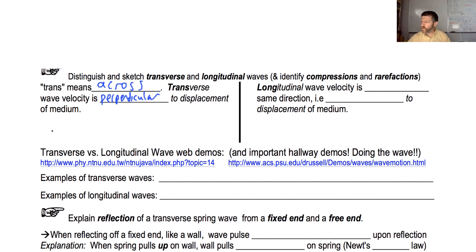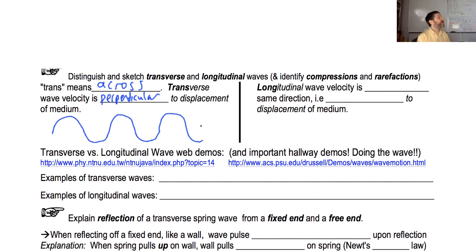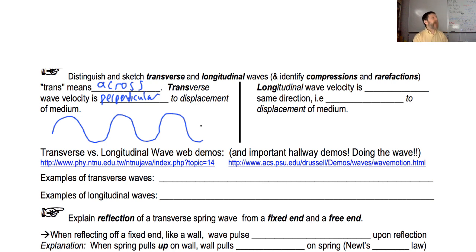Here is a drawing of a transverse wave. It looks just like a sine wave. You can have different shapes of waves — square waves, triangular waves — but this sinusoidal shape is very common. So what are the two things that are perpendicular to each other? The velocity and the displacement of the medium: you're moving the medium up and down, but the wave is going to the right.